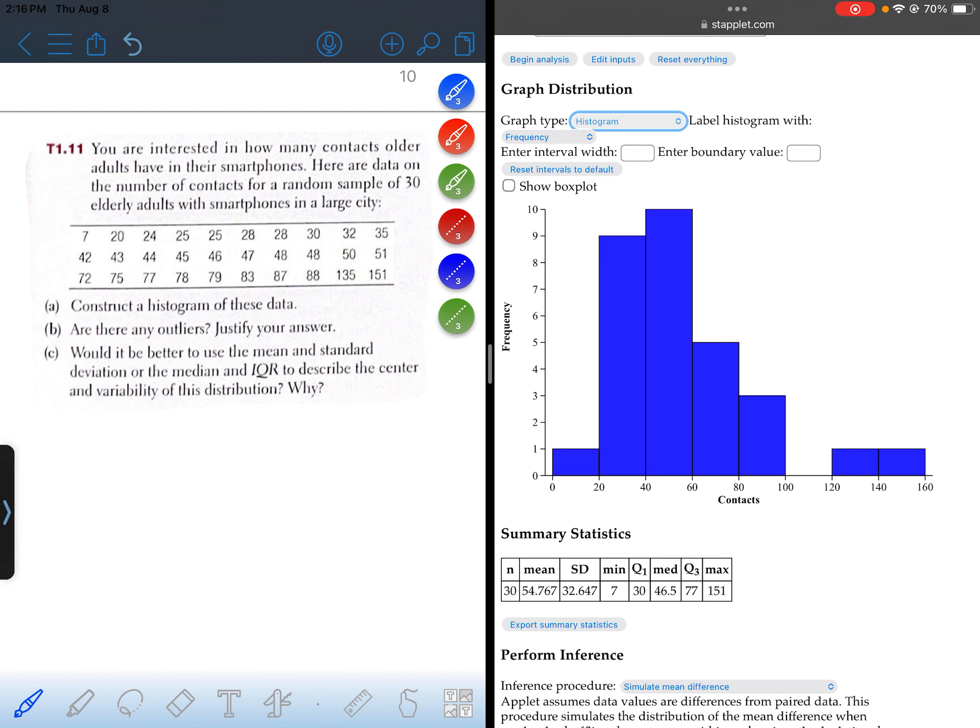Okay, part B: are there any outliers? Justify your answer. Okay, so for this we're going to use the one and a half IQR rule.